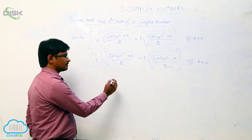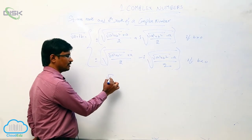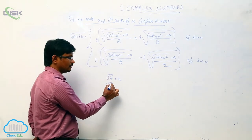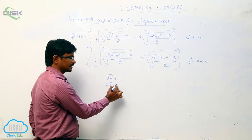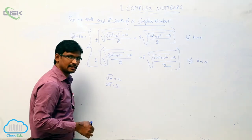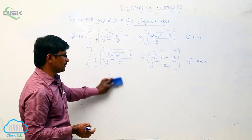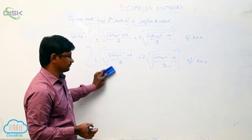In real numbers, we know that square root of 4 is 2, square root of 9 is 3. Like that, in complex numbers also we have square roots.